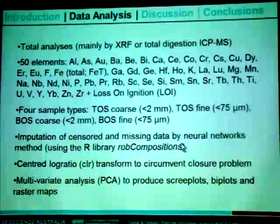We had a total analysis — representing less than 2 millimeters or less than 75 microns fractions — done by XRF or total digest ICP-MS. We also had a strong but partial digest aqua regia, and then a much weaker MMI mobile metal ion digest. For the data analysis, we concentrated on the total components from XRF and ICP-MS. We excluded elements with representativity or detection limit issues, ending up with 50 chemical elements plus loss on ignition. For censored or missing data, we used neural networks to impute the values.